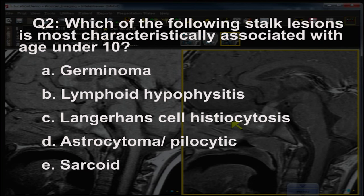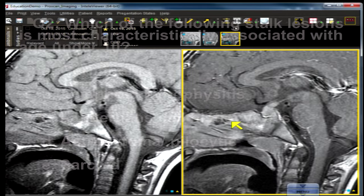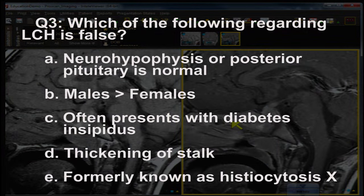Question number two: which of the following stalk lesions is most characteristically associated with age under 10? A) germinoma, B) lymphoid hypophysitis, C) Langerhans cell histiocytosis, D) pilocytic astrocytoma, E) sarcoid.